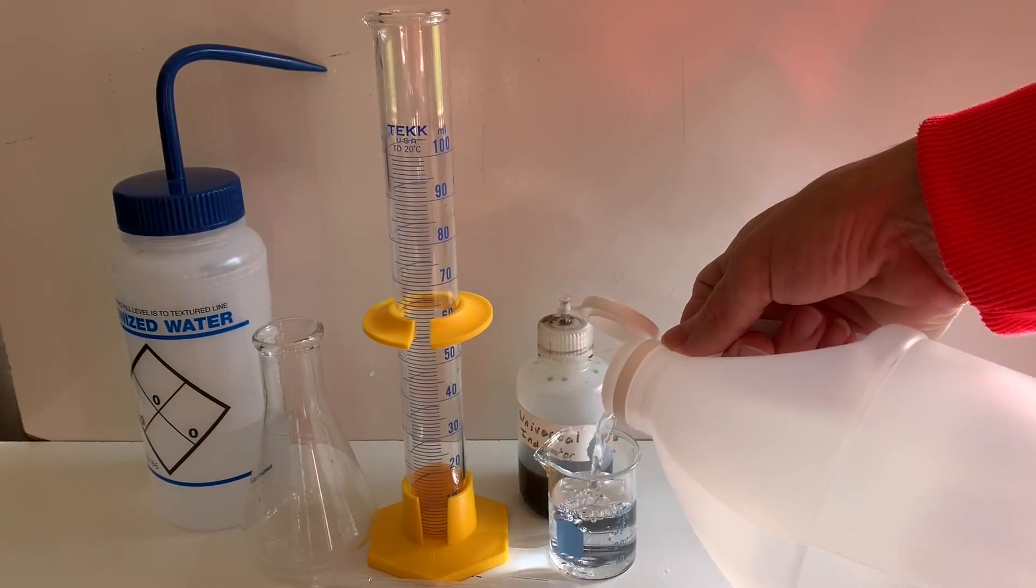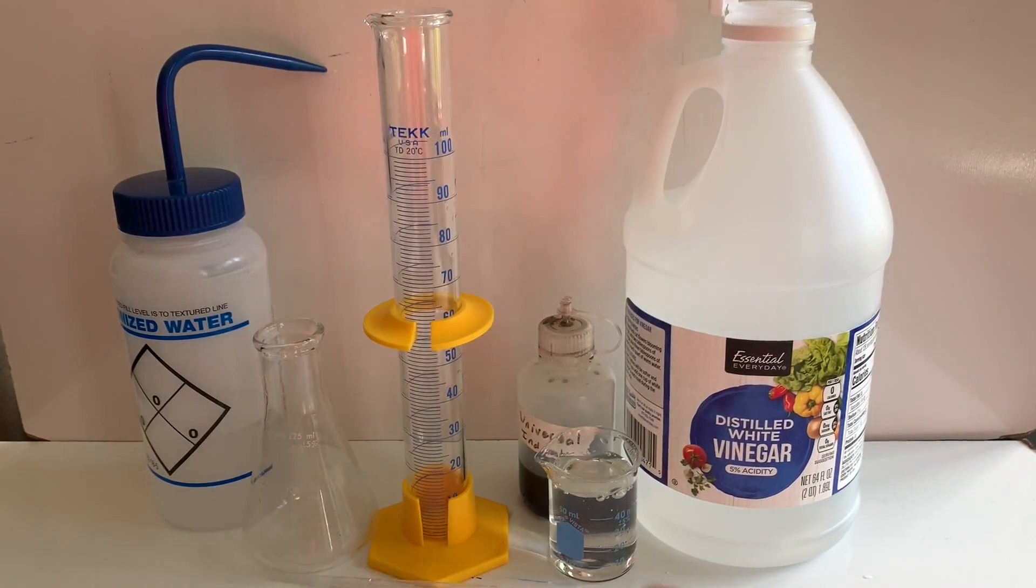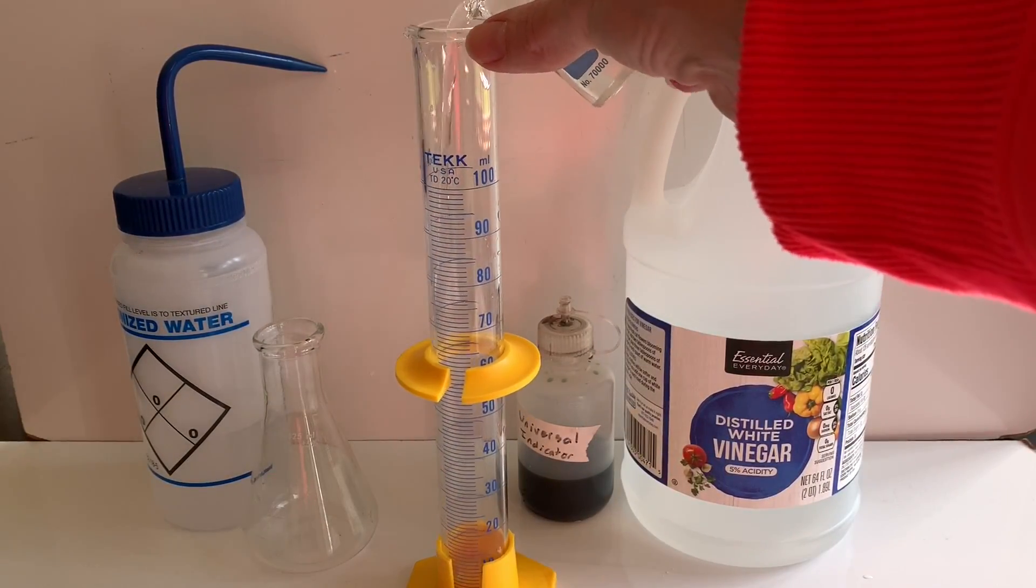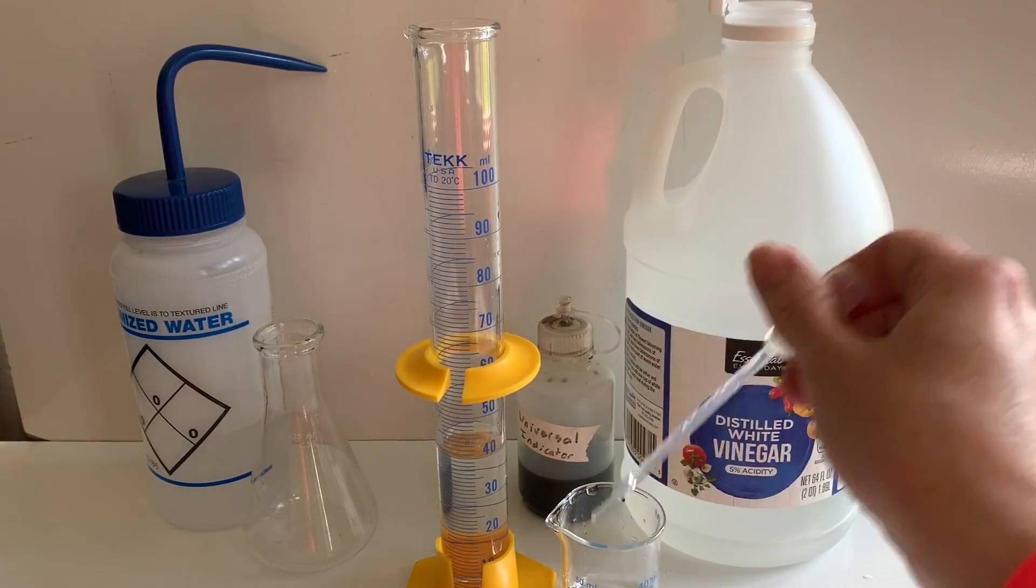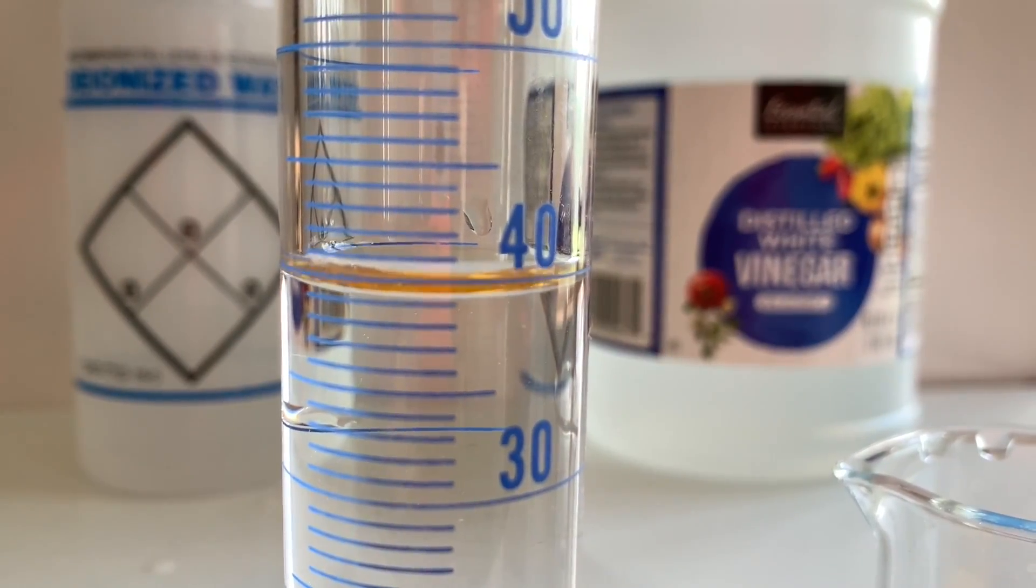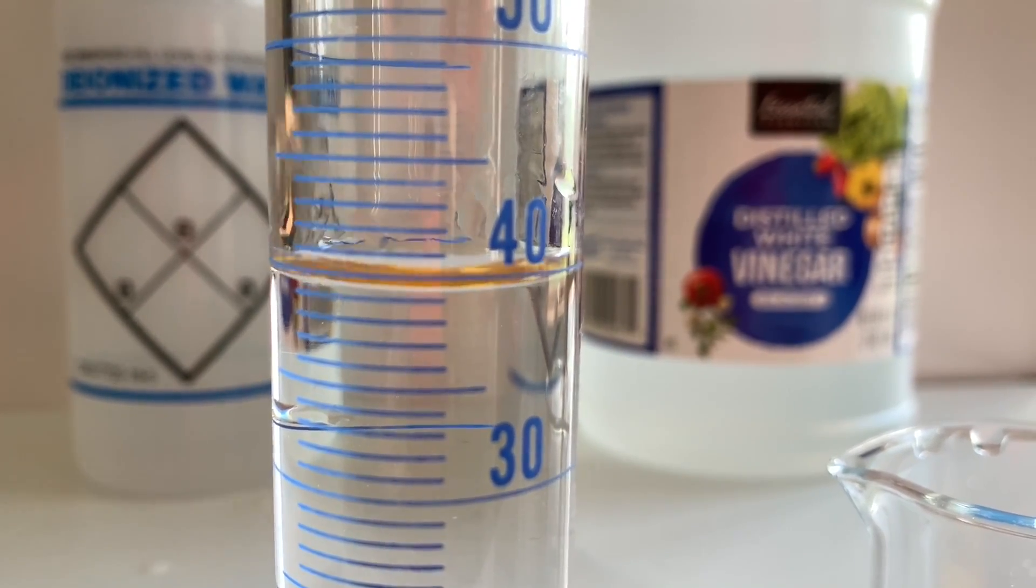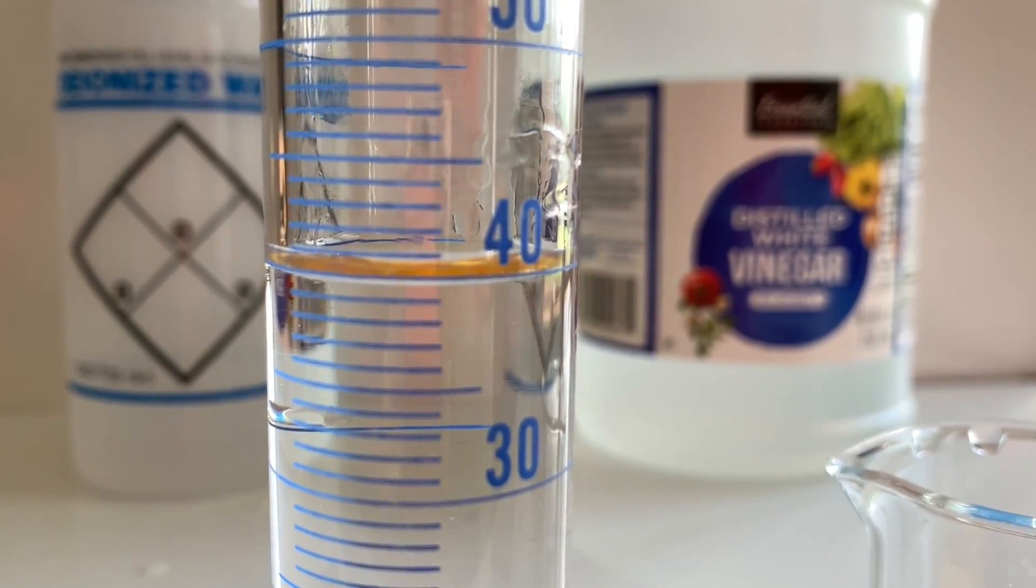The next step of the experiment was to measure 40.0 milliliters of the acetic acid solution which was 0.839 molar. I wanted to make sure I had exactly 40.0 so I need my meniscus right on that 40 line on the graduated cylinder.